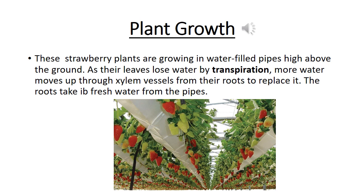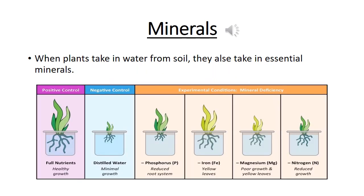Growing plants like this is called hydroponics. What is hydroponics? Hydroponics gardening is a method of growing plants without soil. In hydroponics, plants grow with their roots in water instead of soil. Minerals are defined as naturally occurring inorganic nutrients found in the soil and water.